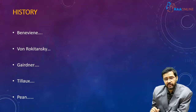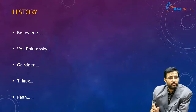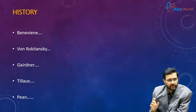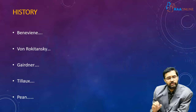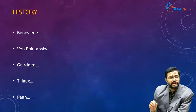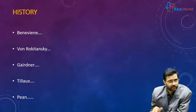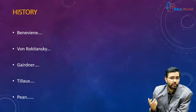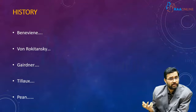Von Rokitansky described the first specific variant of a mesenteric cyst, which is a chylo-lymphatic cyst. Gardner was the first person to describe an omental cyst, and Tillow was the first person to do a successful surgical excision of an omental cyst. Pien was the first person to suggest that marsupialization can also be done for a mesenteric cyst.